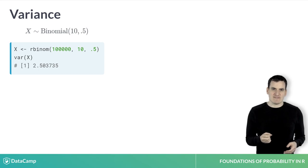We saw on the last slide that the mean of this distribution is 5, so that means 2.5 is the average squared distance between 5 and one random draw.